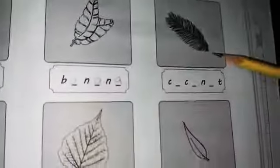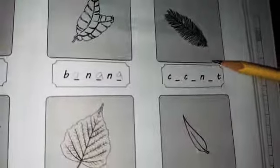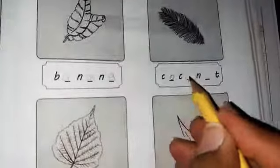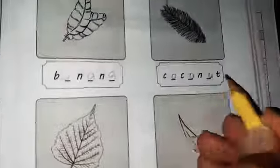Now, this leaf is... Excellent. This leaf is coconut leaf. So write coconut, C-O, C-O, cocoa, N-U-T, nut, coconut.